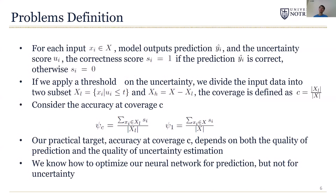Here is a more formal definition of the problem. For each input x, the model outputs a prediction ŷ and uncertainty score u. We define a correctness score s, and s is 1 if the prediction is correct and s is 0 if the prediction is wrong. If we apply a threshold t on the uncertainty score u, we can divide the data into two subsets: x_l, the low uncertainty subset, and x_h, the high uncertainty subset. Then the low uncertainty predictions can be used directly.